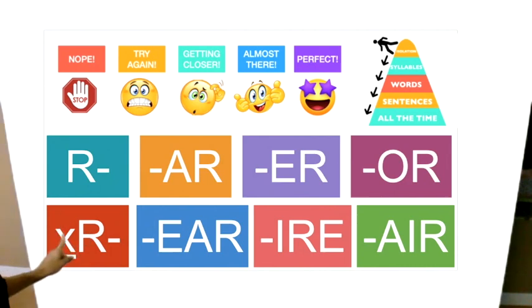This box down here has an x, and then an r. So, this box is for blends. You can put a letter here, like the letter d, to say drink. You could put a b here, to say bread. You could put a t here, to say tree.